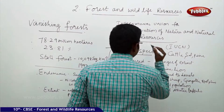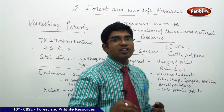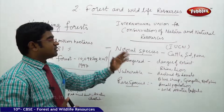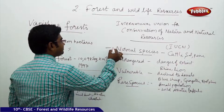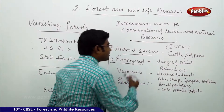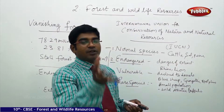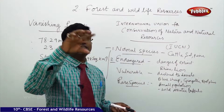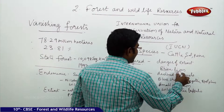The first category is Normal species, where the population of animal species is at normal levels. Examples include cattle and sal pine. The second category is Endangered, which refers to animals that are in danger of extinction — they have fallen from normal levels to a situation where they may disappear. Examples include rhino and lion.